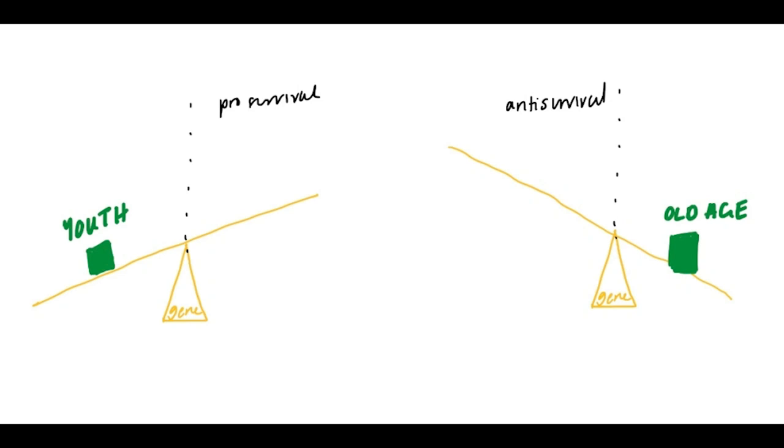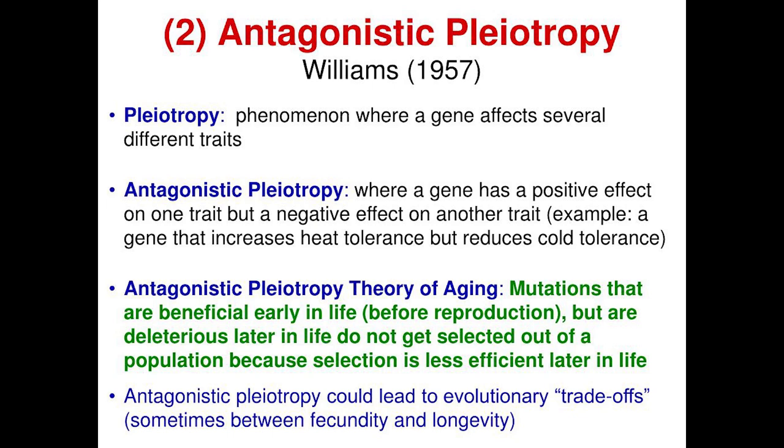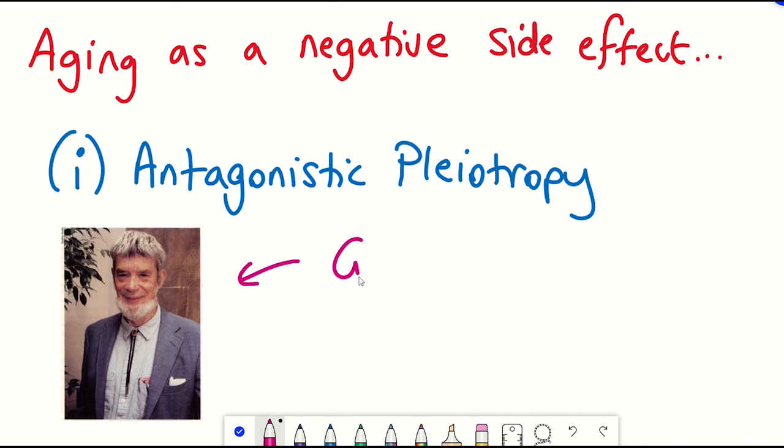In other words, these traits can confer advantages for reproduction and survival during youth, but can contribute to the aging process or increase susceptibility to diseases later on. Williams argued that natural selection favors these traits because they enhance reproductive success during the prime reproductive years, even if they come with negative consequences in later life stages.